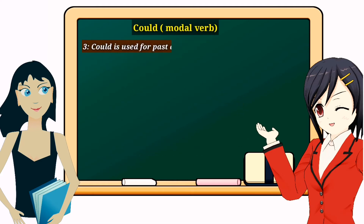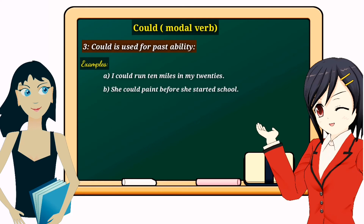'Could' is used for past ability. For example, 'I could run 10 miles in my 20s' — here 'could' is used for past ability, meaning you were able to run 10 miles at the age of 20. Another example: 'She could paint before she started school,' meaning painting was her ability before going to school.